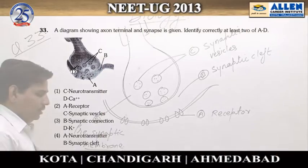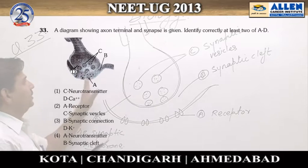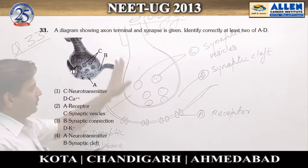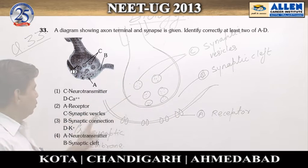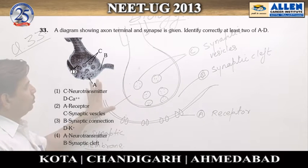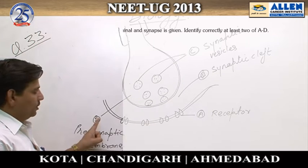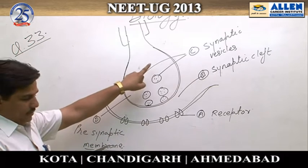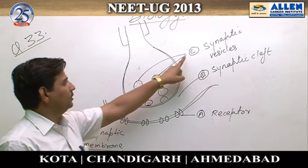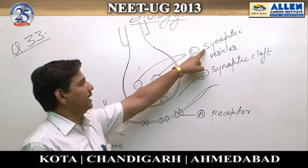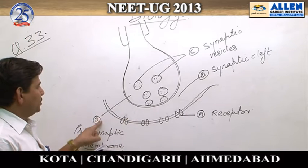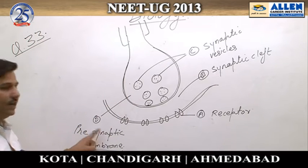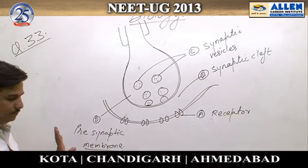Question number 33 is related to the axonal terminal and the synapse. We need to identify the two correct matches from options A to D. In option one, C is stated to represent neurotransmitter, but C actually represents synaptic vesicle. Also, D is stated to represent calcium ion, but D actually represents presynaptic membrane — so option one is incorrect.